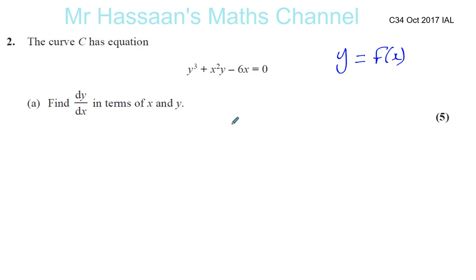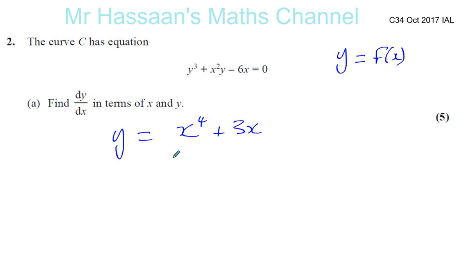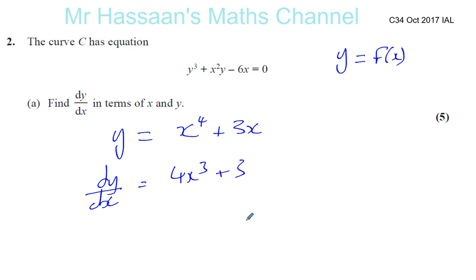I'm going to show you something — this is not the question, it's something else. Suppose you have y equals x to the power of 4 plus 3x. What we normally would do is say dy/dx equals 4x cubed plus 3. That's 4x cubed plus 3 and we're done. That's how you differentiate something with respect to x.